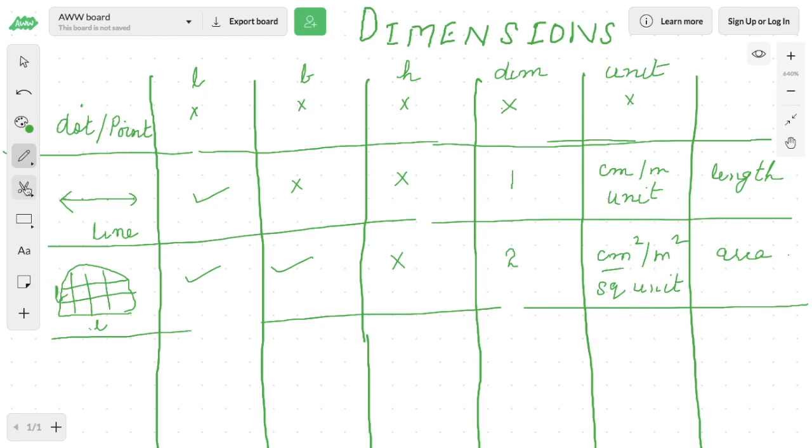Now two directions we have done. If I draw a figure, square, which has length and breadth, and I go in another direction, that is its height, I make a cube like this.